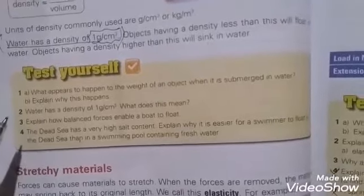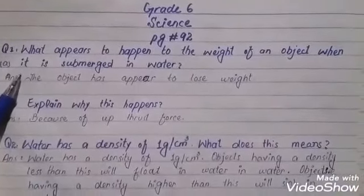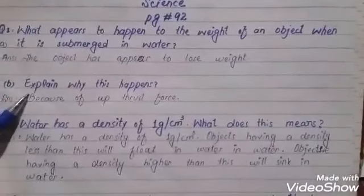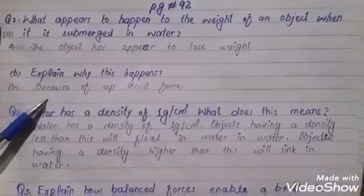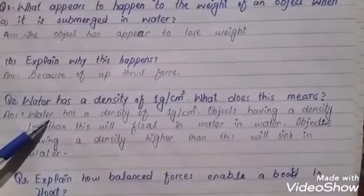Test yourself questions, page 92. First question: What appears to happen to the weight of an object when it is submerged in water? The object appears to lose weight. Part B: Explain why this happens. Because of the upthrust. Second question: Water has a density of 1 gram per cubic centimeter. What does this mean?